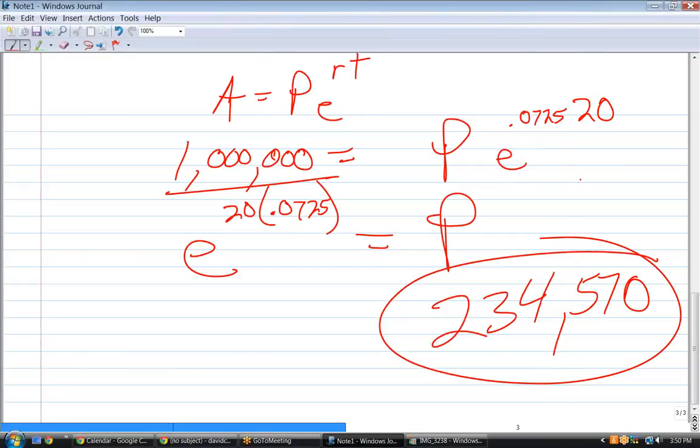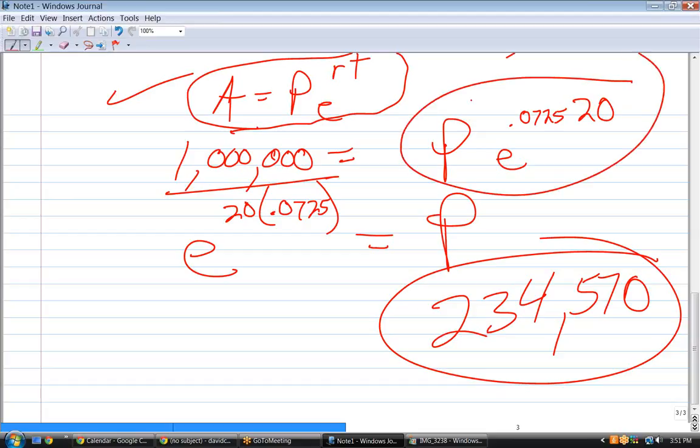Notice what happened in that problem. We took one equation and they gave you four different problems. One, they gave you the principle and the rate. The other gave you a different rate, different times in each one, different principles in each one. But in each piece of that problem, we were able to set up an equation that only had one variable. And it's very important to understand E is not a variable.